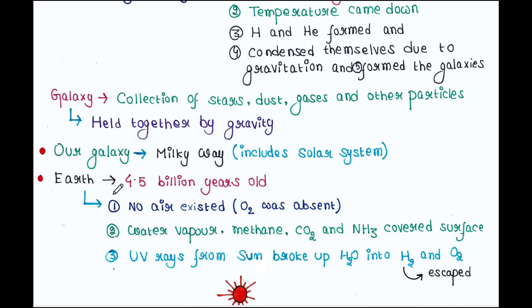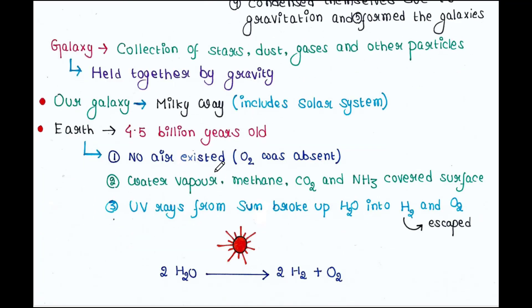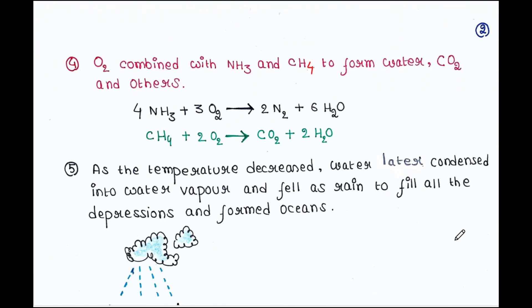Earth was formed around 4.5 billion years back. That time, no air existed. Hence, oxygen was absent. Water vapor, methane, CO2 and ammonia covered the surface. UV rays from sun broke up water into hydrogen and oxygen. Hydrogen is lighter, it escaped. Oxygen combined with ammonia and methane to form water, CO2 and others.